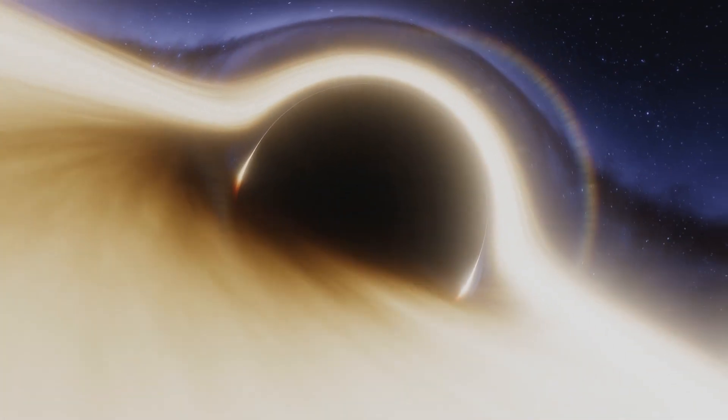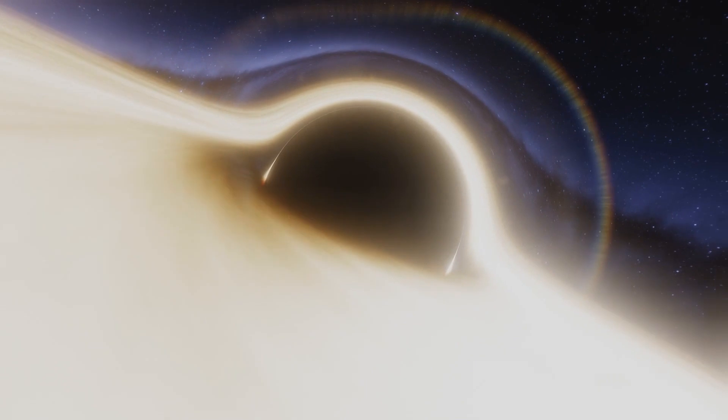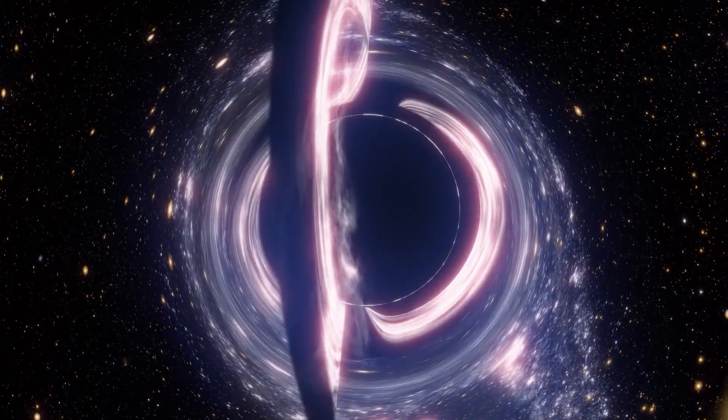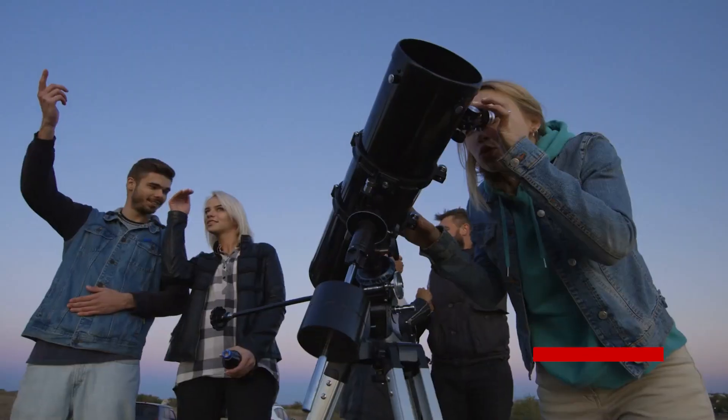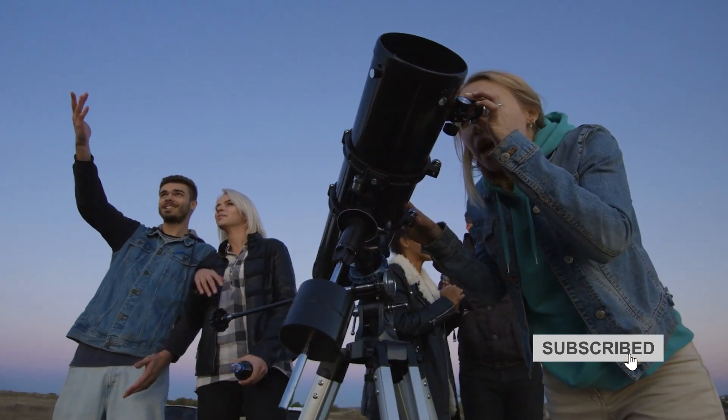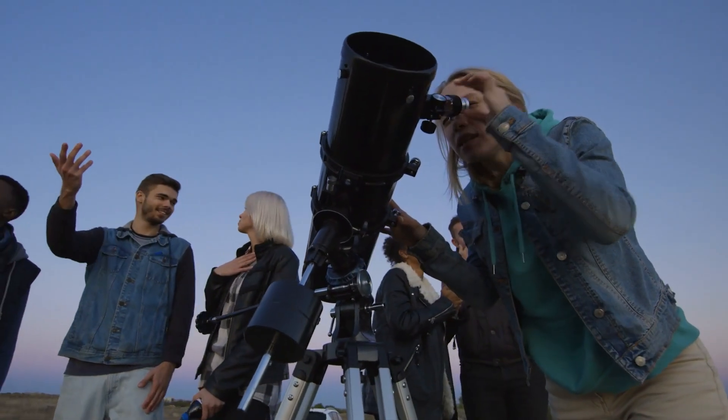And if this black hole origin theory is true, the math should show it. By recalculating cosmic distances, red shifts, and the rate of expansion under this new model, scientists might finally resolve the Hubble tension and a few other paradoxes along the way.